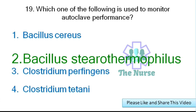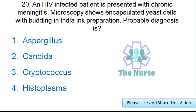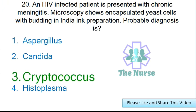Next question: An HIV-infected patient is presented with chronic meningitis. Microscopy shows encapsulated yeast cells with India ink preparation. The probable diagnosis is which of the following? Options: Candida, Cryptococcus, or Histoplasma. Correct answer: Cryptococcus.